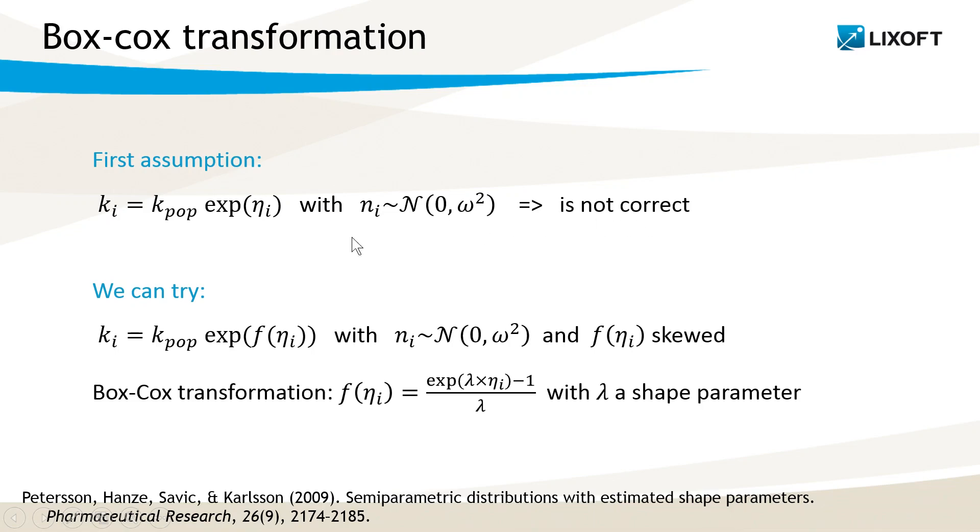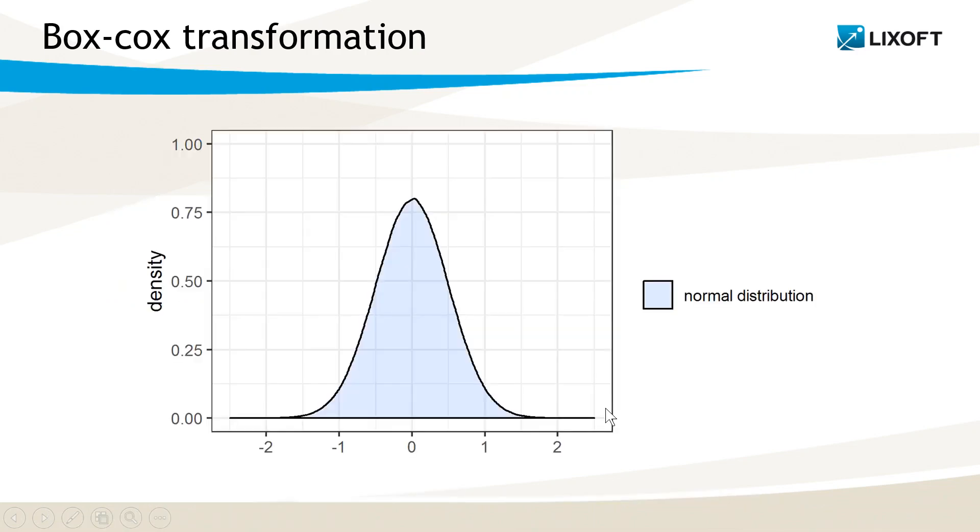What we can do instead is to assume such a distribution with the eta still following a normal distribution, but f a transformation that transforms the eta such that f of eta is a skewed distribution. One convenient transformation is the Box-Cox transformation, as proposed in this paper, which has the following formula. This transformation adds one additional parameter, lambda, that controls how much a normal distribution is distorted by the transformation.